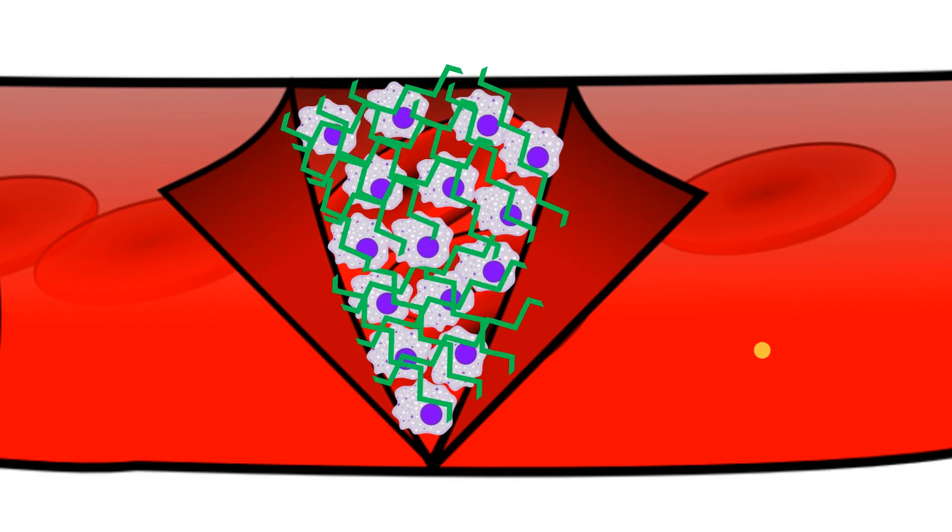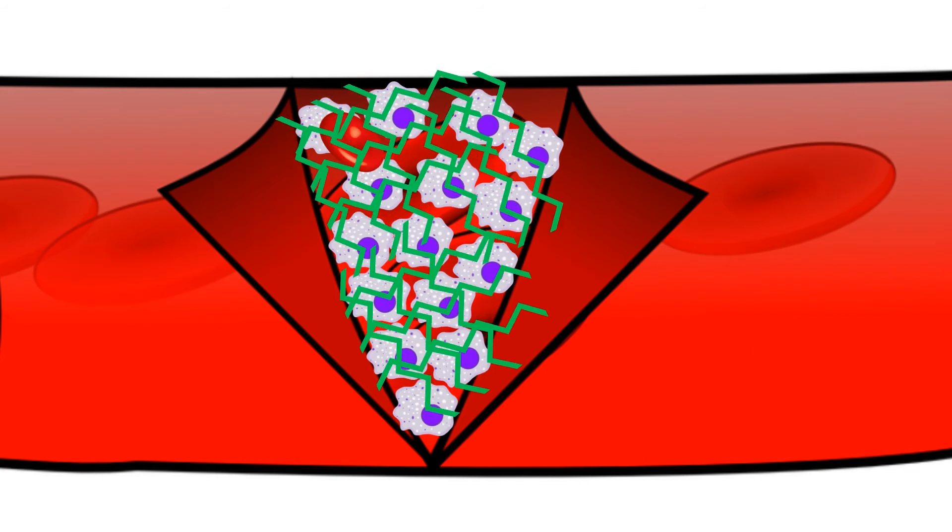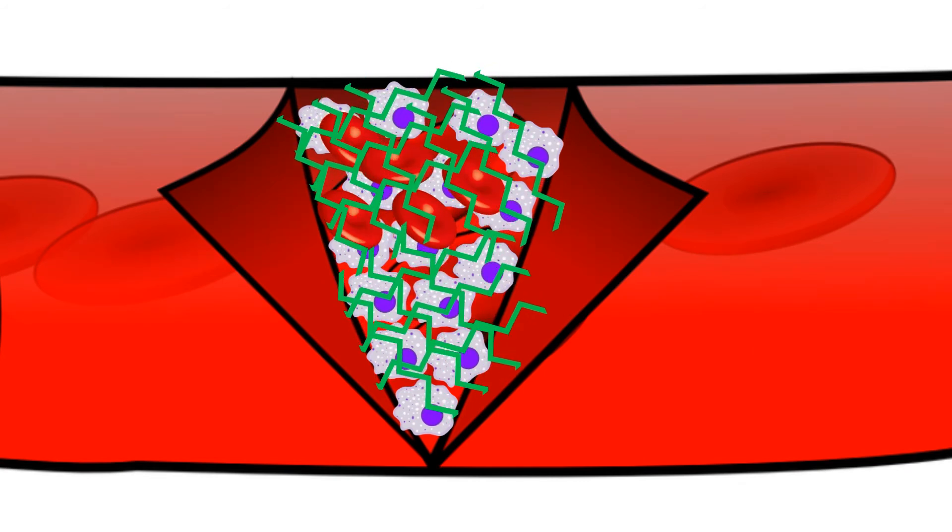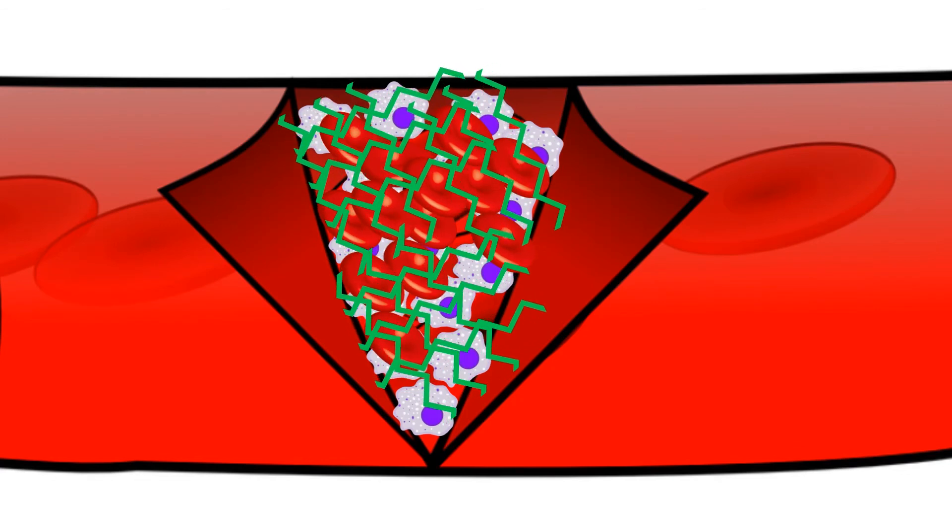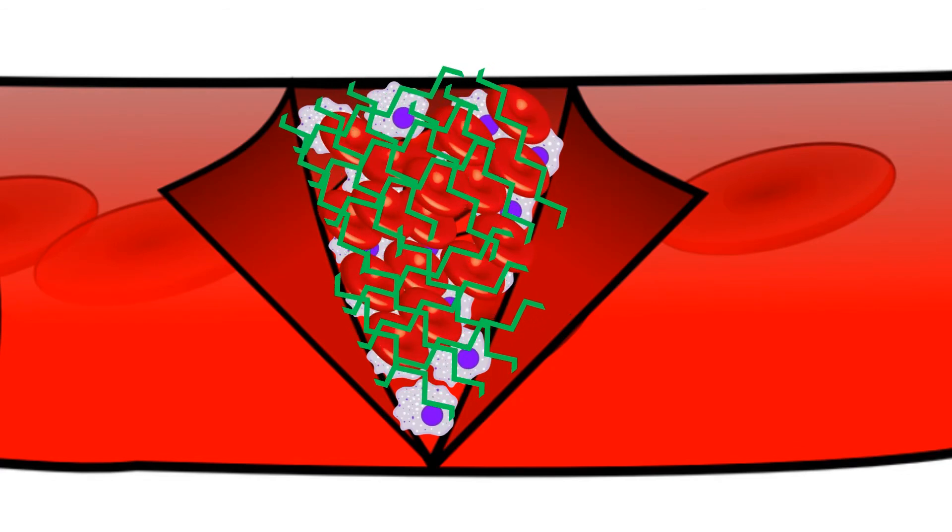Fibrin is insoluble and forms a net-like covering across the damaged vessel. As blood tries to flow through the net, red and white blood cells and platelets are trapped and form a clot.